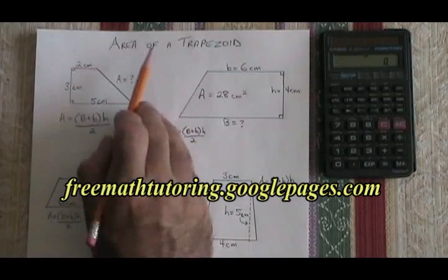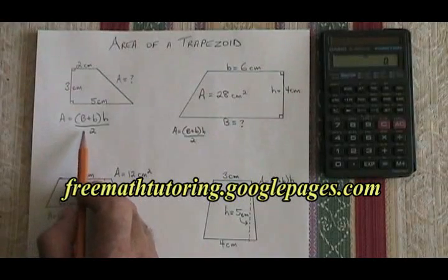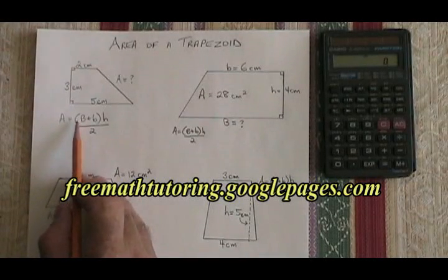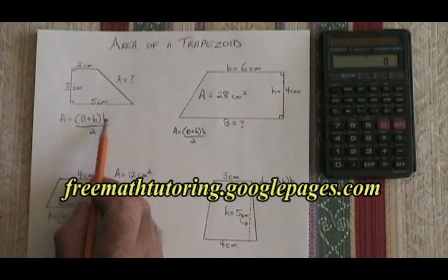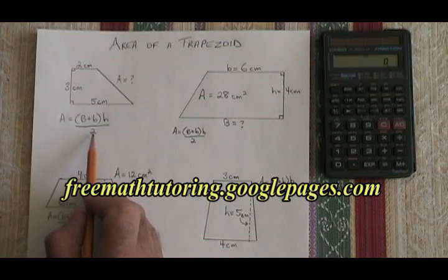The formula for the area of a trapezoid looks like this. A equals open bracket big B plus little b close bracket times H, all over 2.